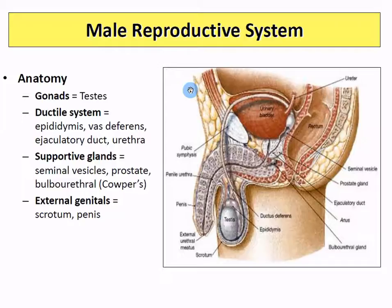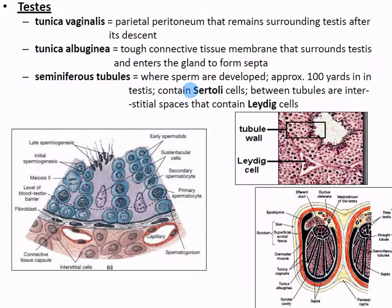The external genitalia - the clitoris and the glans penis are basically the same structure because they're both full of nerves and erectile tissue, just in different sexes. So a lot of this anatomy is more of a review to remind you where your head should be as we go through reproduction.